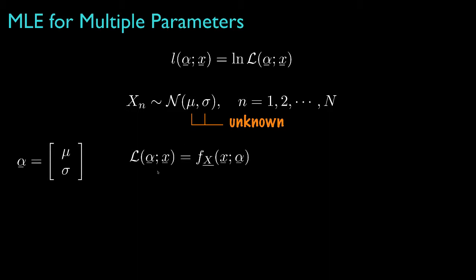The parameter vector then has two elements, mu and sigma, and the likelihood is specified by the probability density for the data, which, because the data are independent, is the product of the Gaussian densities.